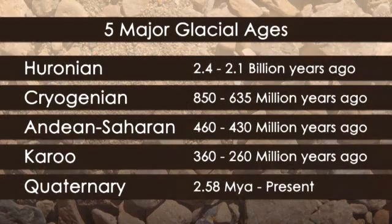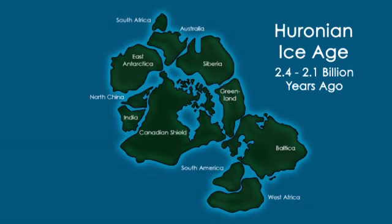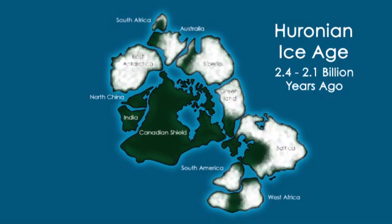Geologists have evidence of five major ice ages, more properly called glacial ages. The earliest well-established glacial age, called the Huronian, formed between 2.4 to 2.1 billion years ago, during the early Proterozoic Eon.